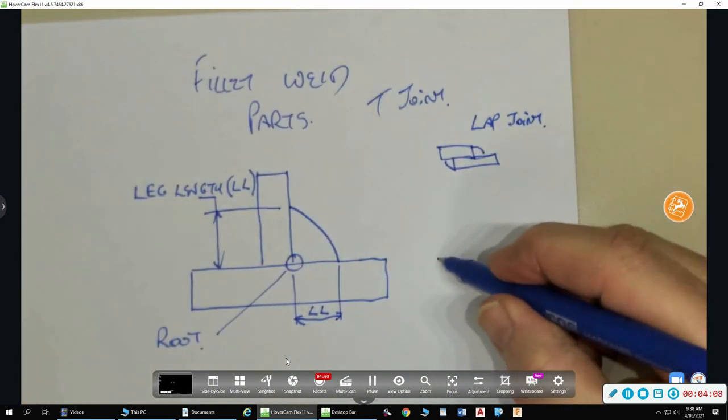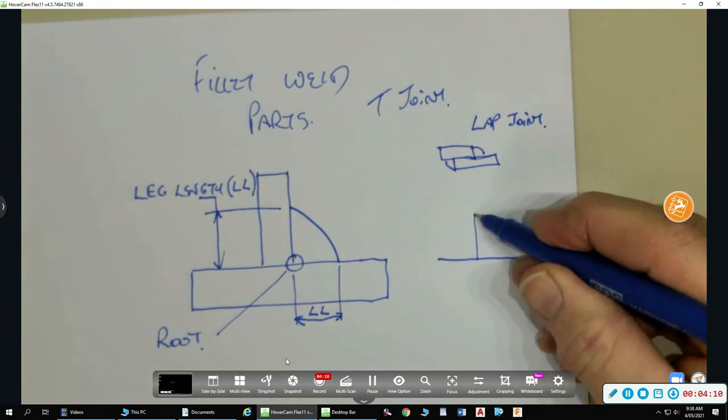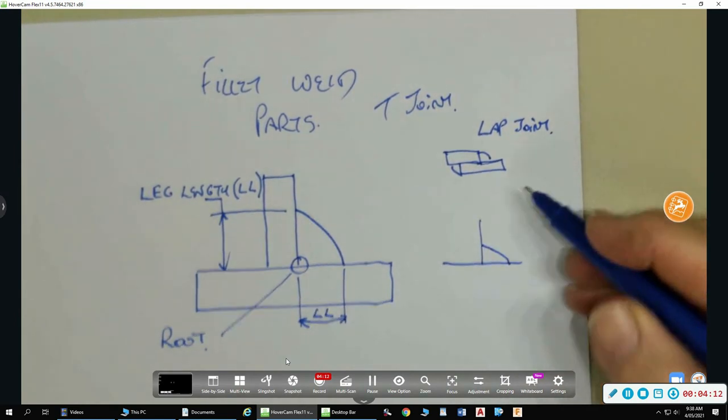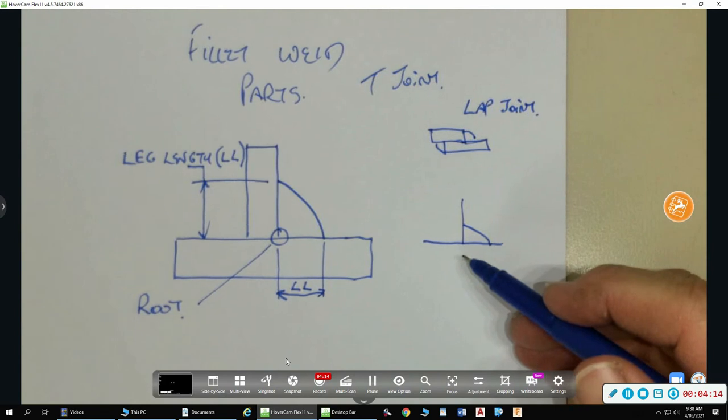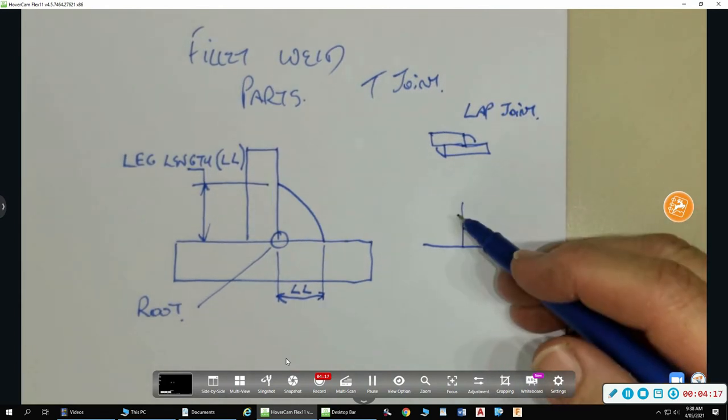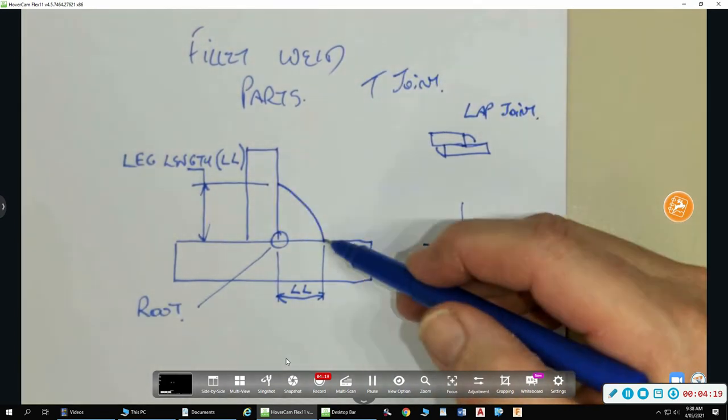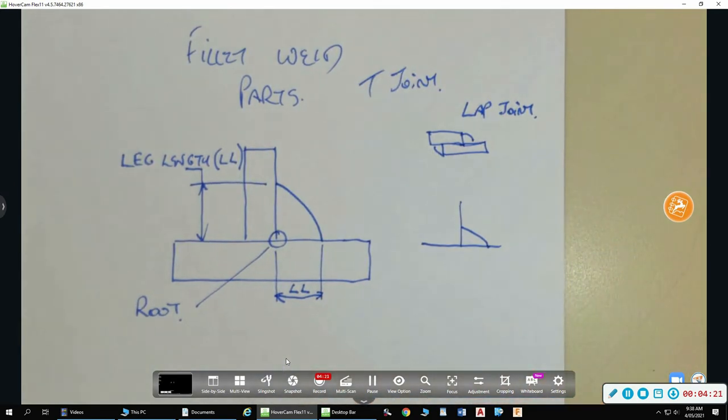Often you get welds that are looking like this. And that's a defect because you haven't got an even deposit on both sides. So you're looking for that even deposit and the leg length to be the same. That's what we're looking for, a nice uniform fillet weld.